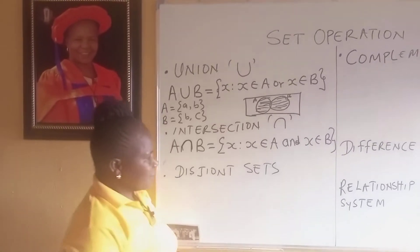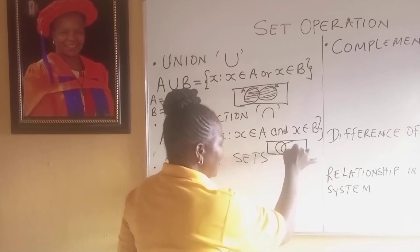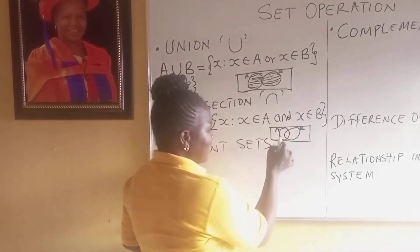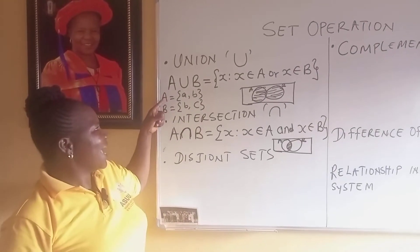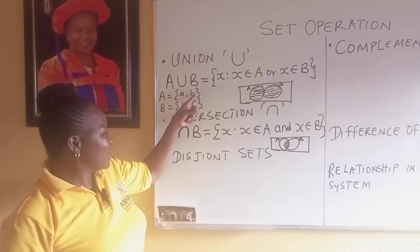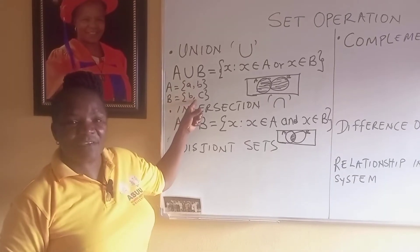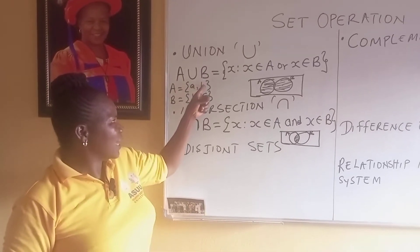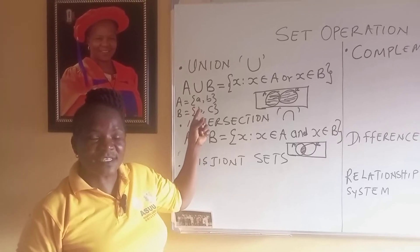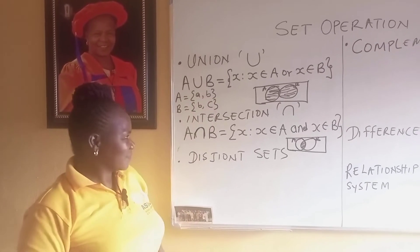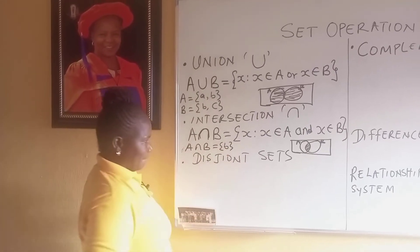Pictorially, if this is A and this is B, the intersection is what they have in common — that overlapping region. Looking at this example: A equals {A, B} and B equals {B, C}. A intersection B here would be what they have in common, and that is B. So A intersection B is the set that contains B.